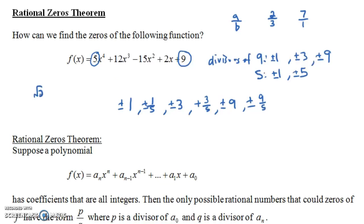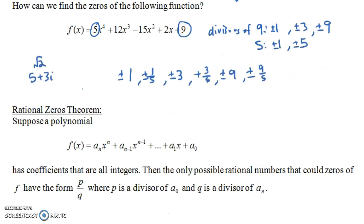Now, could something like the square root of two be a zero? Yes, it's possible, because the square root of two is irrational. So this theorem is only narrowing down the possibilities for the rational zeros. Similarly, could five plus three i be a zero? Well, it's possible — it doesn't get ruled out by the rational zeros theorem, because we're only looking at rational zeros.